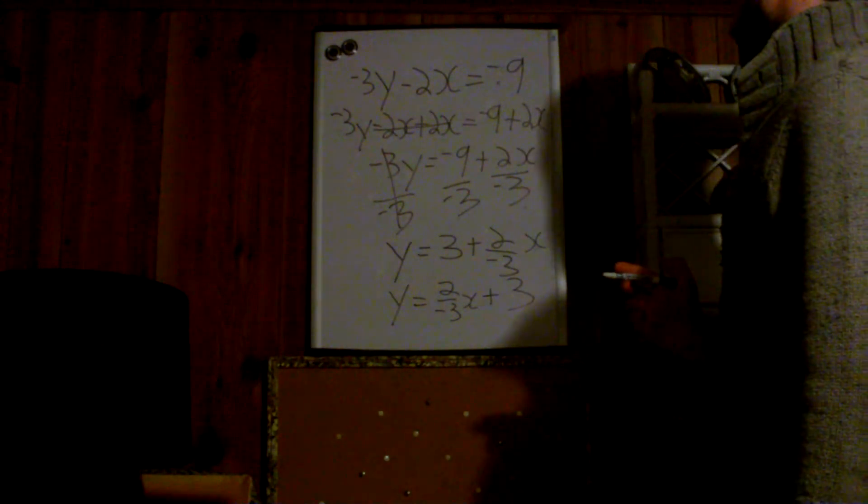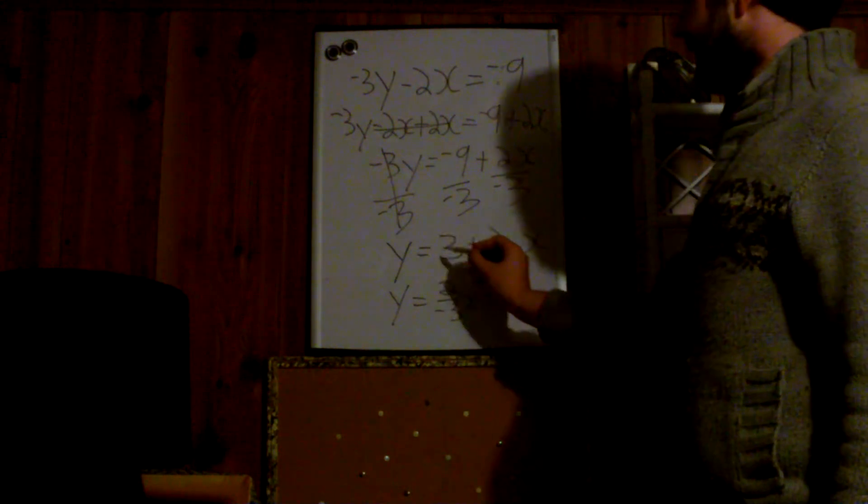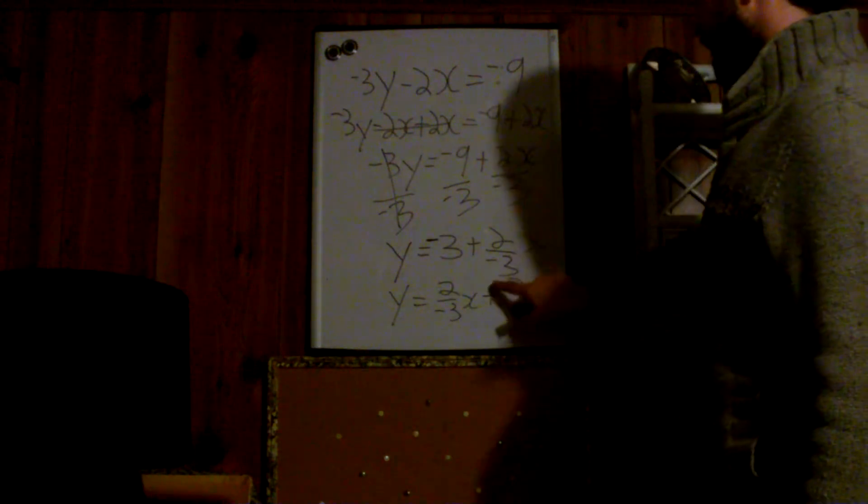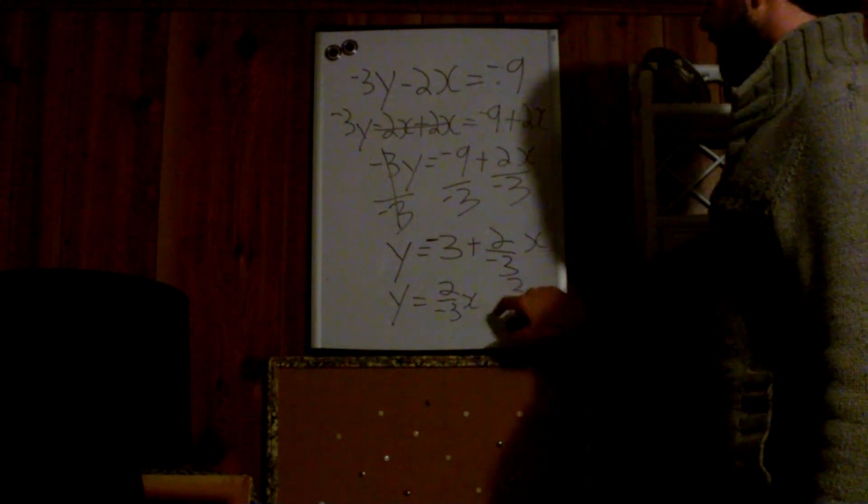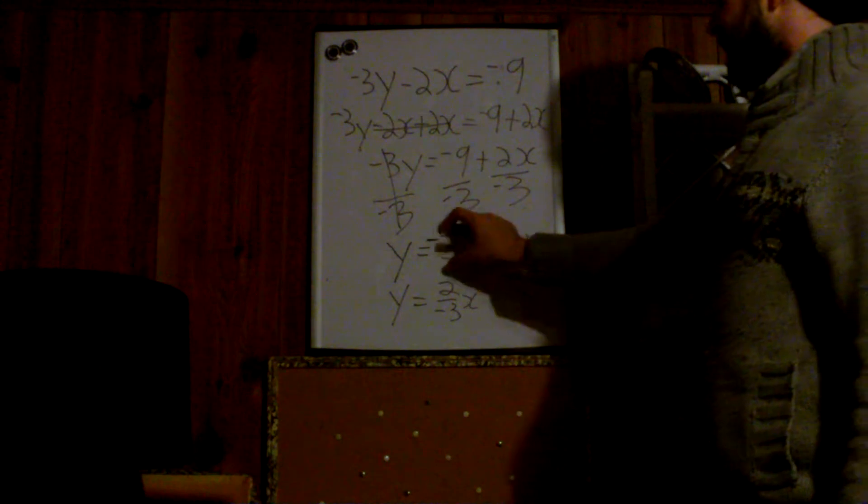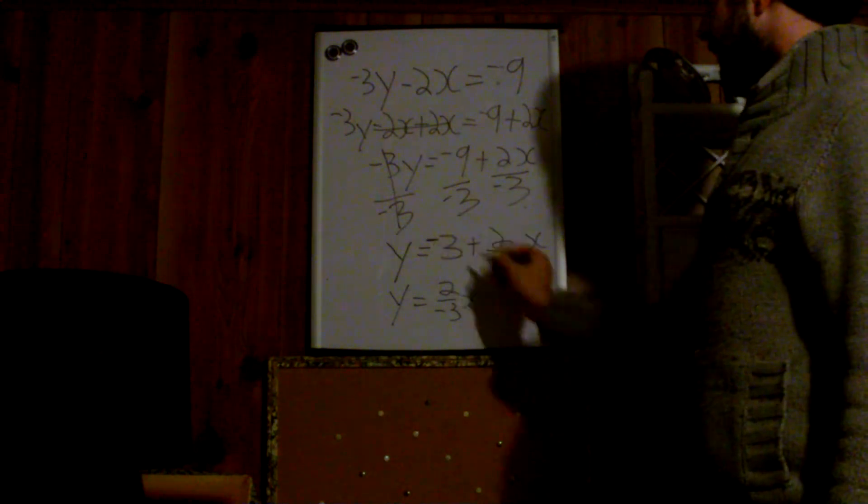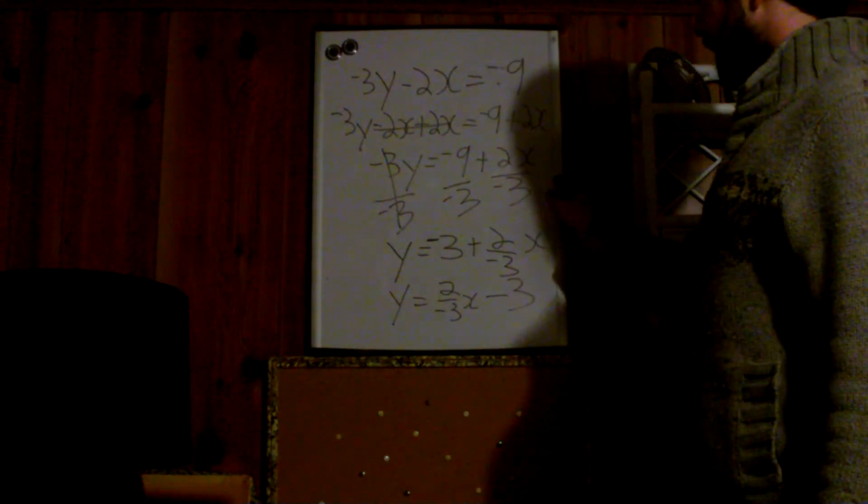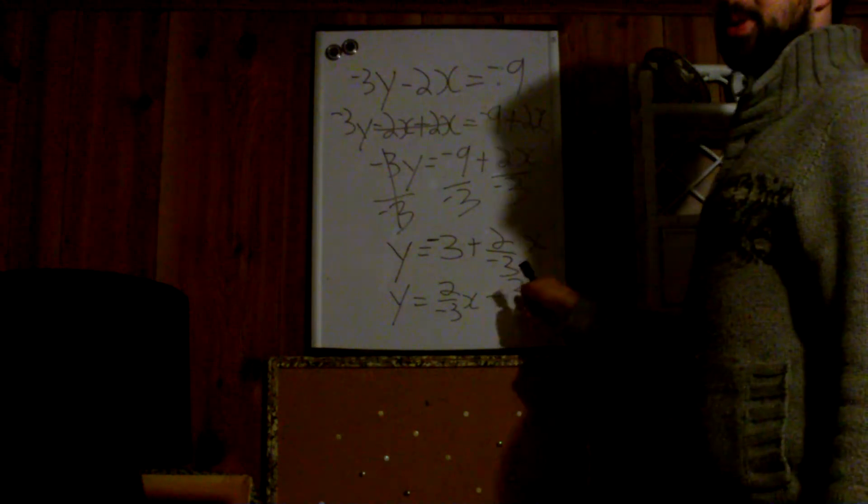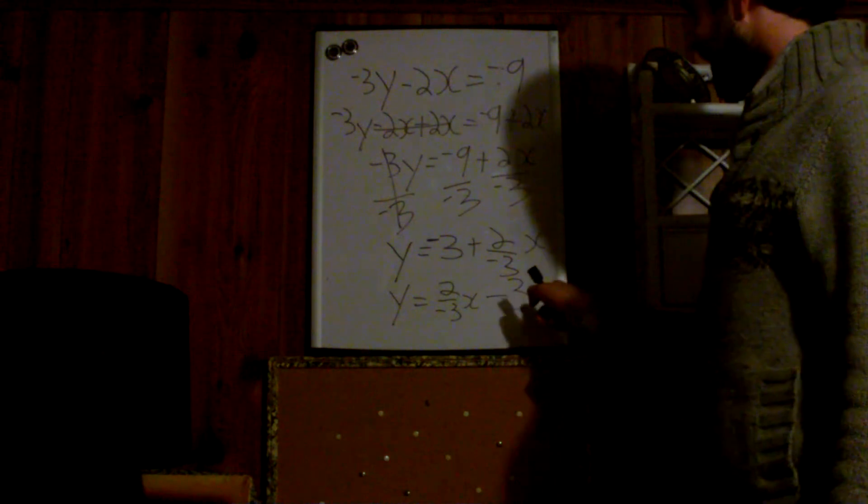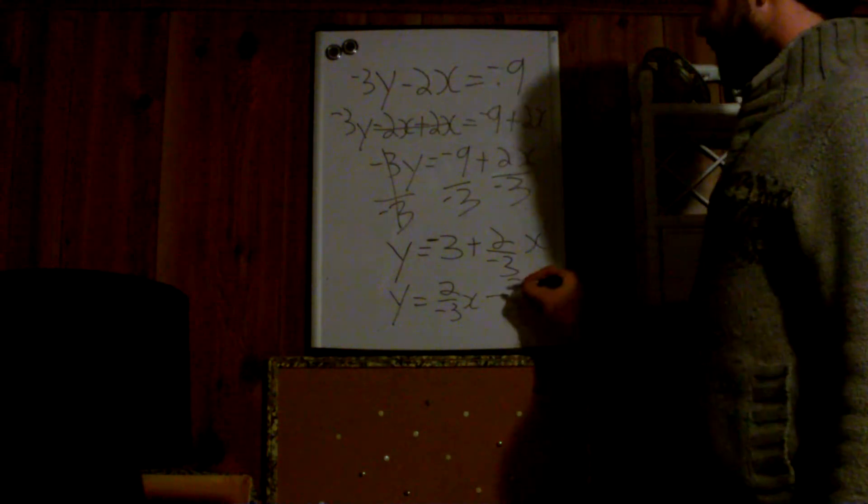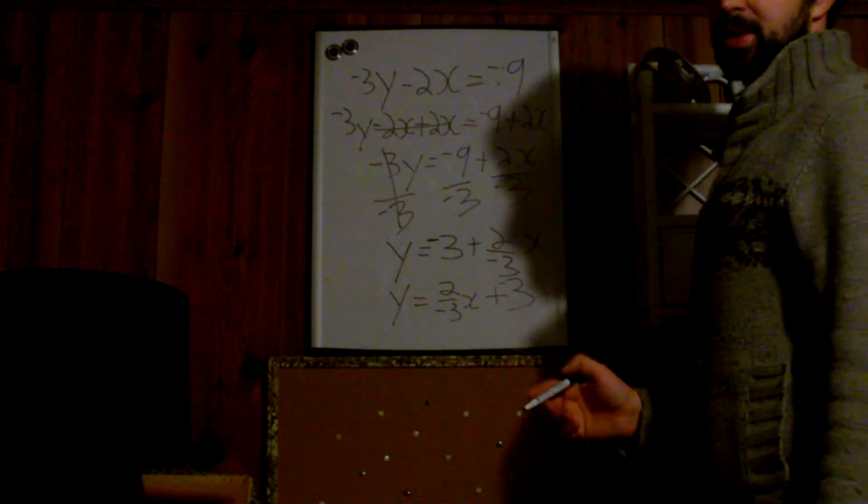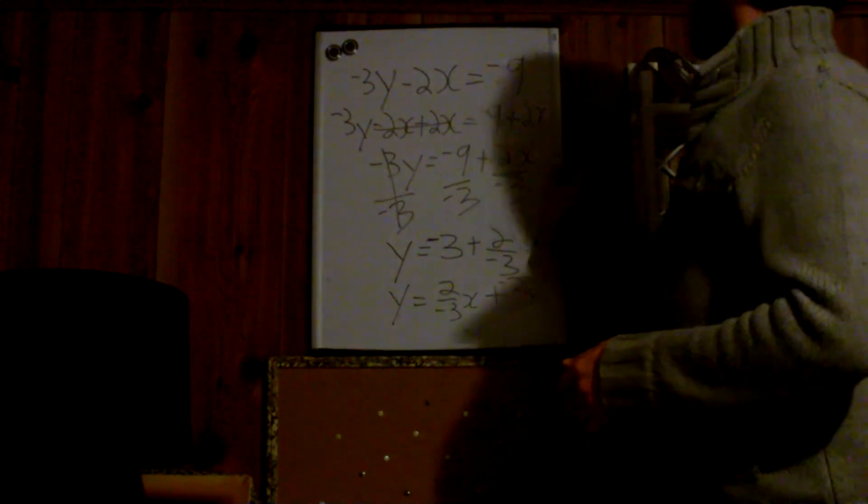Now if this were a negative 3, our final equation would look a little different. The sign comes with the number when it moves. So if this were a negative 3 and this negative 3 moves over here, the negative 3 comes with the 3. There's my dog again. So you could say subtract 3 or plus negative 3. It means the same thing. Shut up!